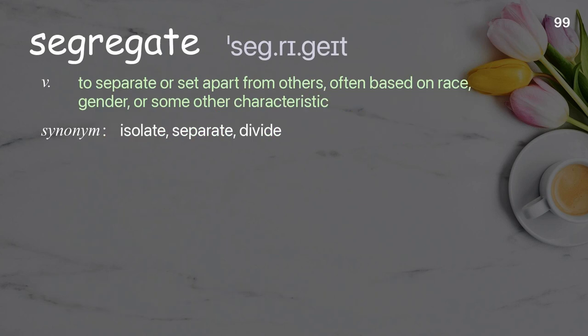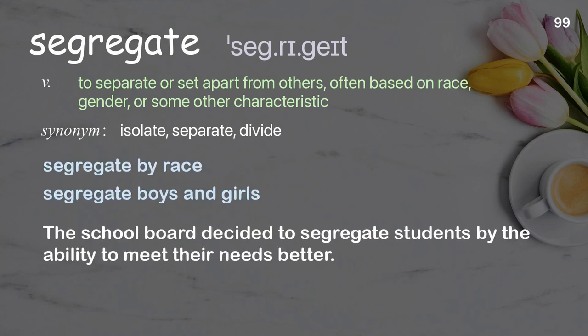Segregate: to separate or set apart from others, often based on race, gender, or some other characteristic. Examples: Segregate by race. Segregate boys and girls. The school board decided to segregate students by ability to meet their needs better.